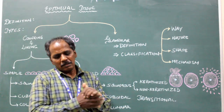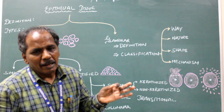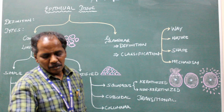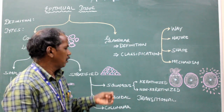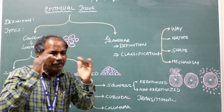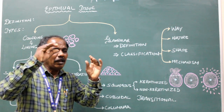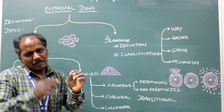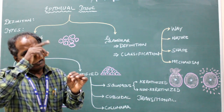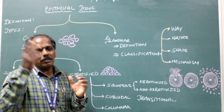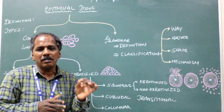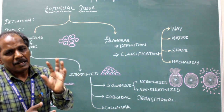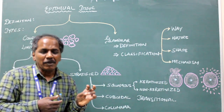Pseudo-stratified ciliated columnar epithelium: pseudo means false, so it gives the appearance as if it is more than one layer, though it is not truly stratified. On the surface it also has cilia — hair-like projections. This is known as pseudo-stratified ciliated columnar epithelium, and it is present in the trachea and primary bronchi.